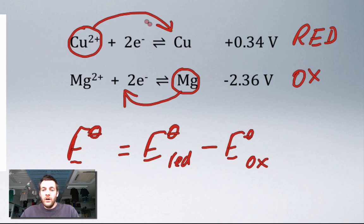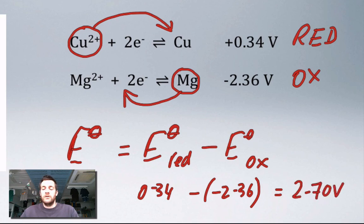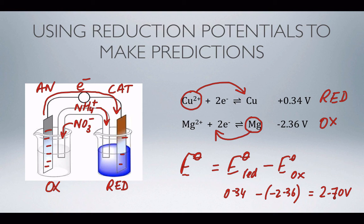The overall cell potential is the standard electrode potential for the reduction process minus the standard electrode potential for the oxidation process — the difference between the two numbers. For this cell it's the reduction process 0.34 minus (minus 2.36), which equals 2.70 volts. So if a magnesium electrode is placed in a 1 mol/L magnesium ion solution and a copper electrode in a 1 mol/L copper ion solution at 25°C with a salt bridge between them, the voltmeter should read 2.7 volts.